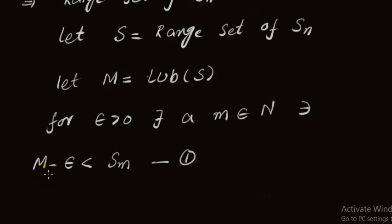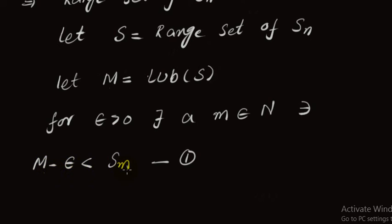Since M minus epsilon is not the least upper bound, not all terms of the sequence need to be less than M minus epsilon. So there must be some term of the sequence which is greater than M minus epsilon. I choose a term Sm which is greater than M minus epsilon — in other words, M minus epsilon is less than Sm.